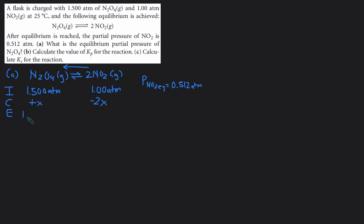And then the E line would just be the sum of the two lines. So 1.500 plus x and 1.00 minus 2x. That is equal to the equilibrium pressure. So we can set that equal to 0.512 and then we can subtract one from both sides and divide it by negative 2 to get x. And that would give us an x value of 0.244 atm.